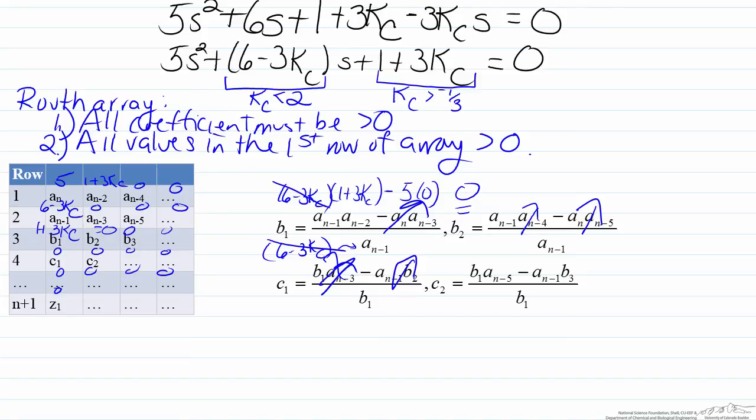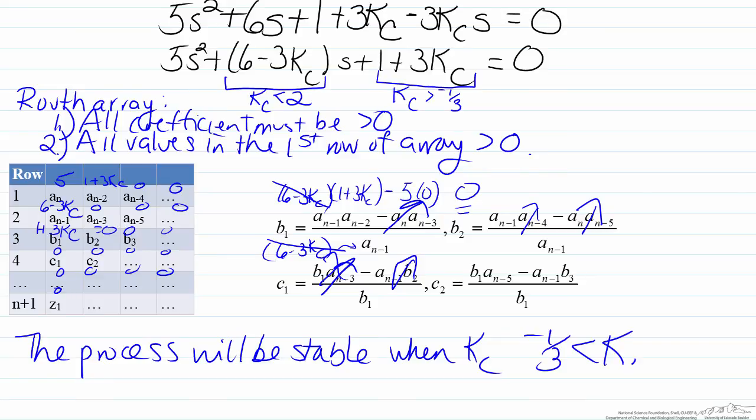So therefore the range of the coefficients is sufficient. So therefore here the process will be stable in the range when Kc is in between negative one third and 2.